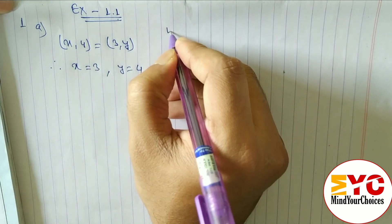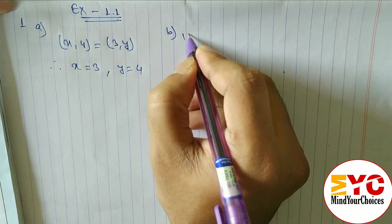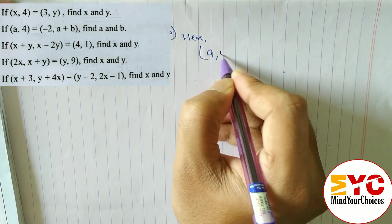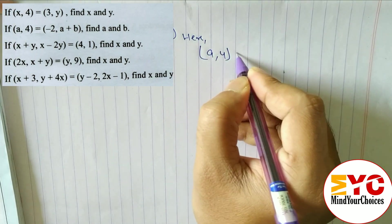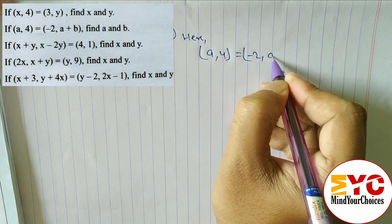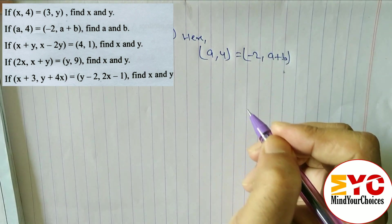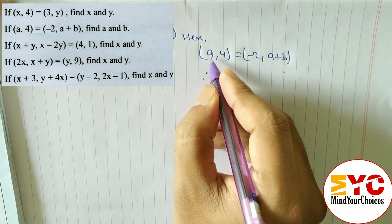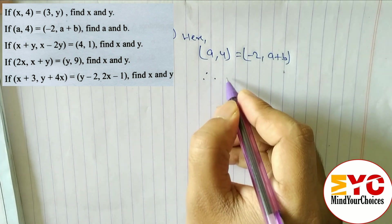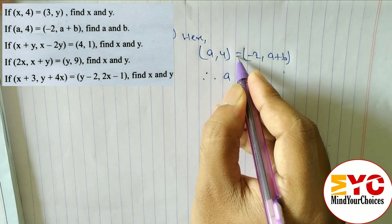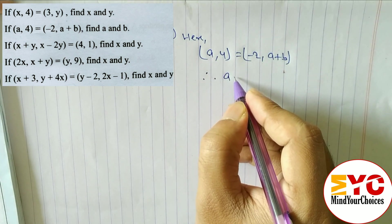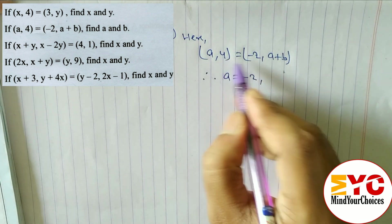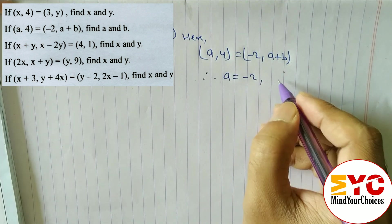Now look at question b. Here, a4 is equal to minus 2a plus b. We have to find the value of a and b. Comparing x components, a is equal to minus 2.